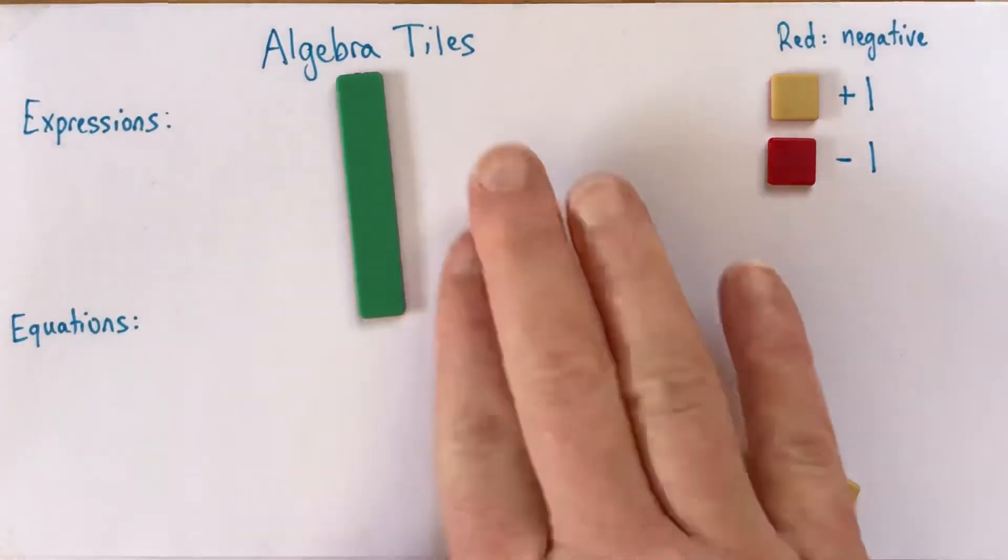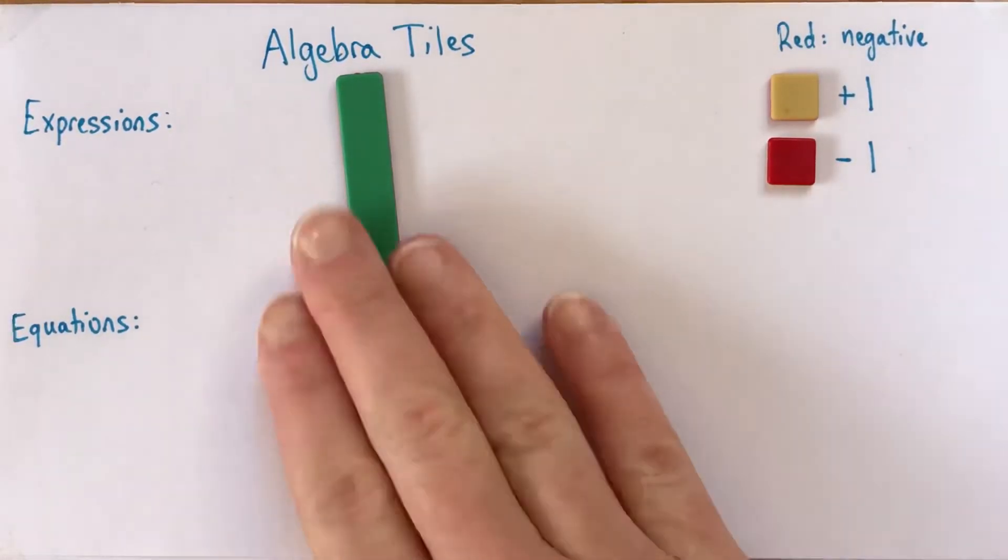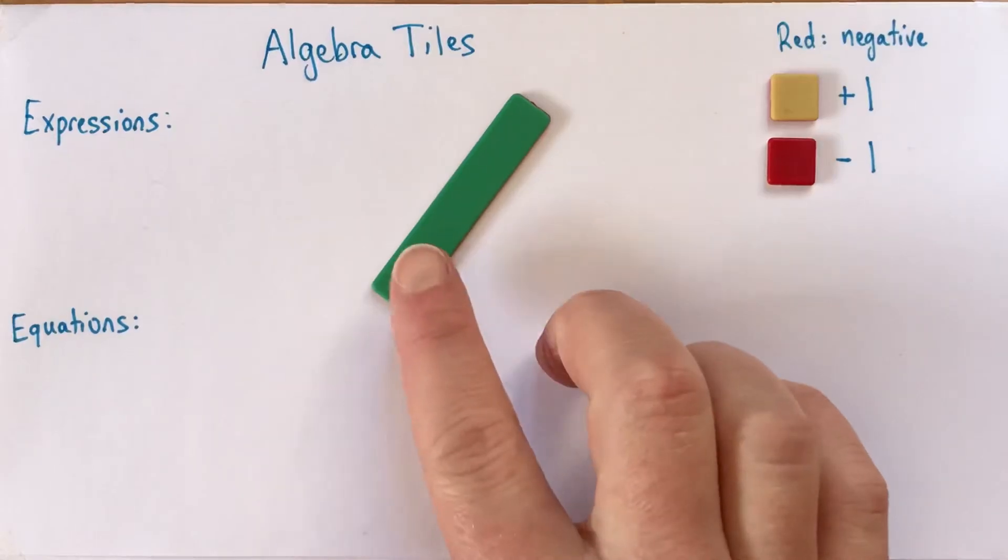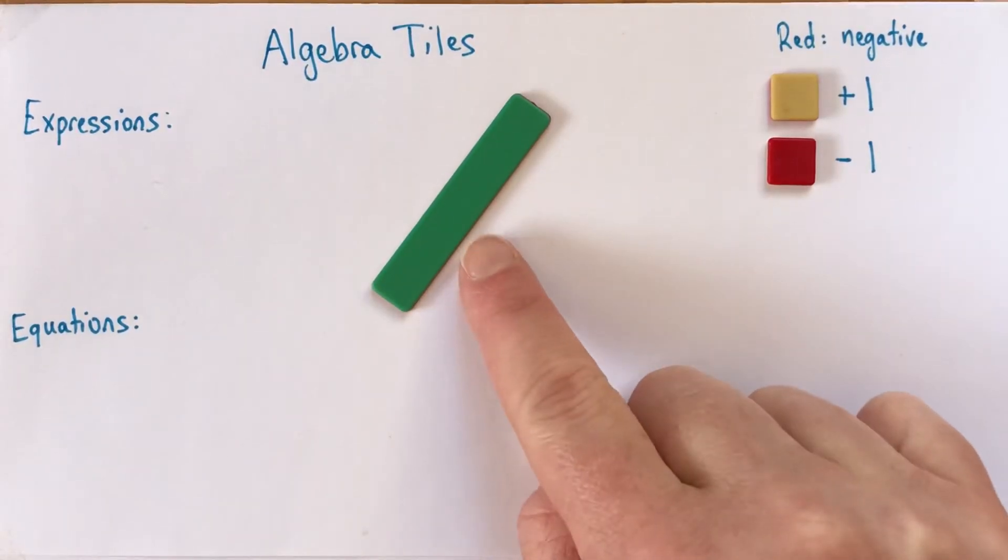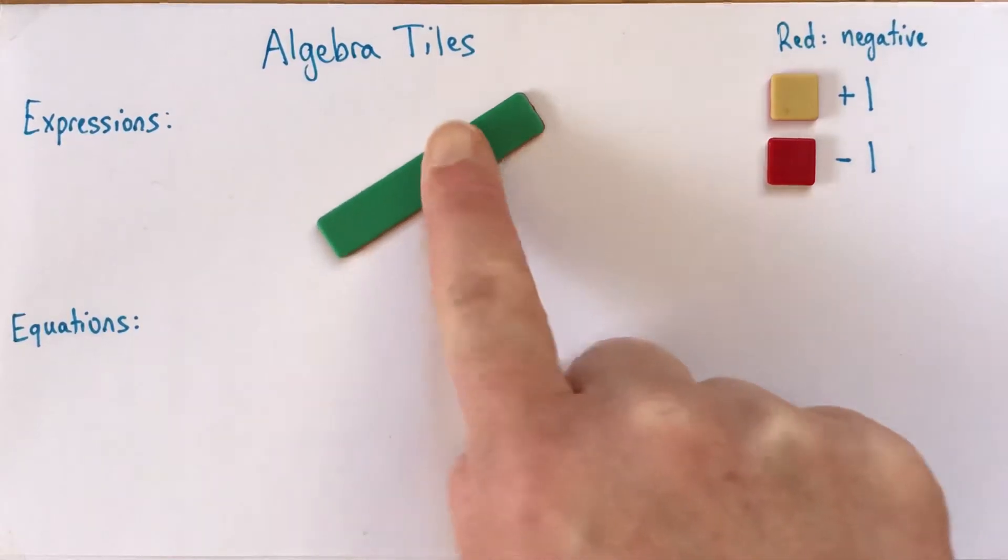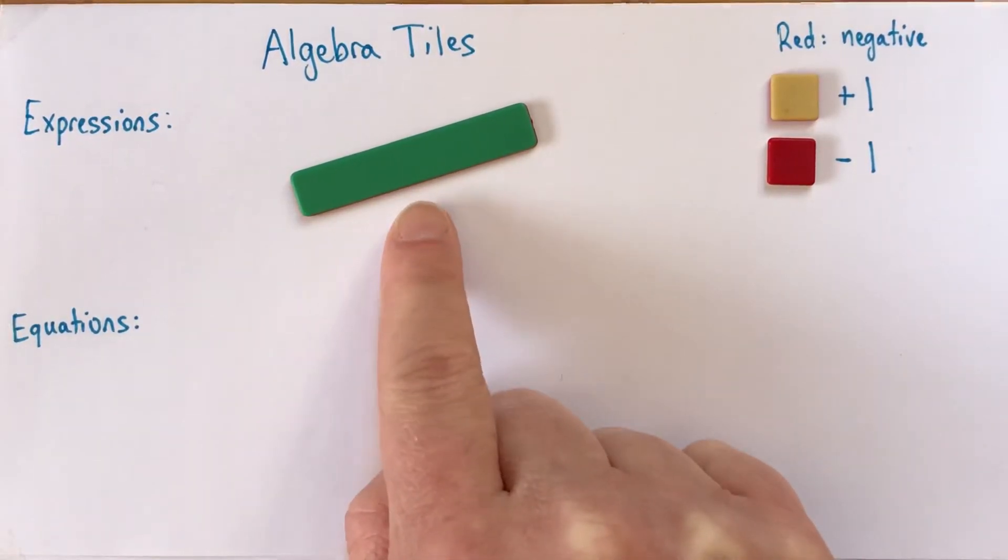So we call this one here a variable tile. Sometimes, for short, I call it an X tile, but it doesn't need to represent X. It could represent A or B or any other variable. We use this to represent either a quantity that we don't know how big it is and we're trying to find out, or a quantity that could take on different values at different times.